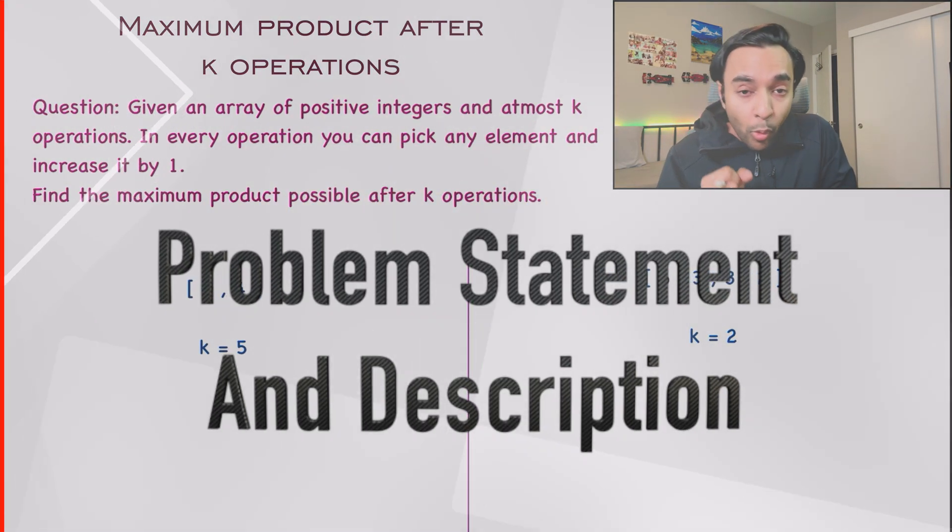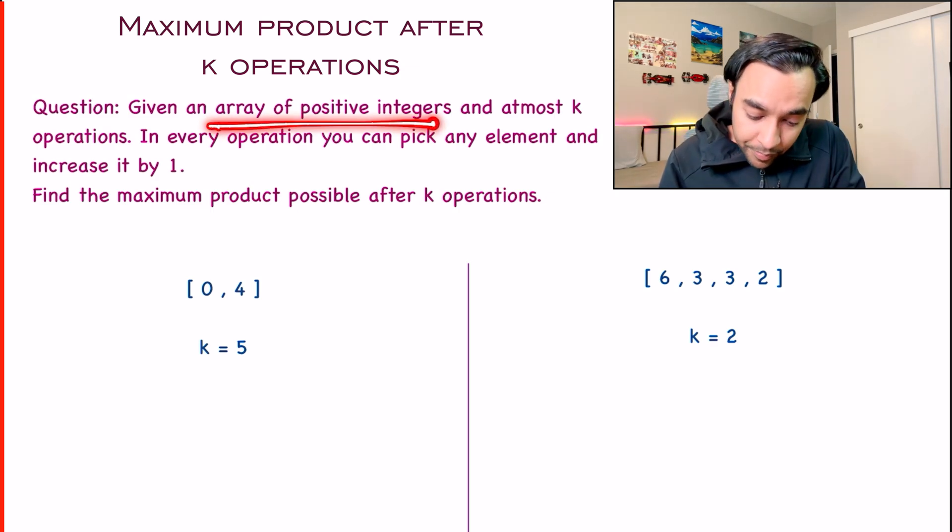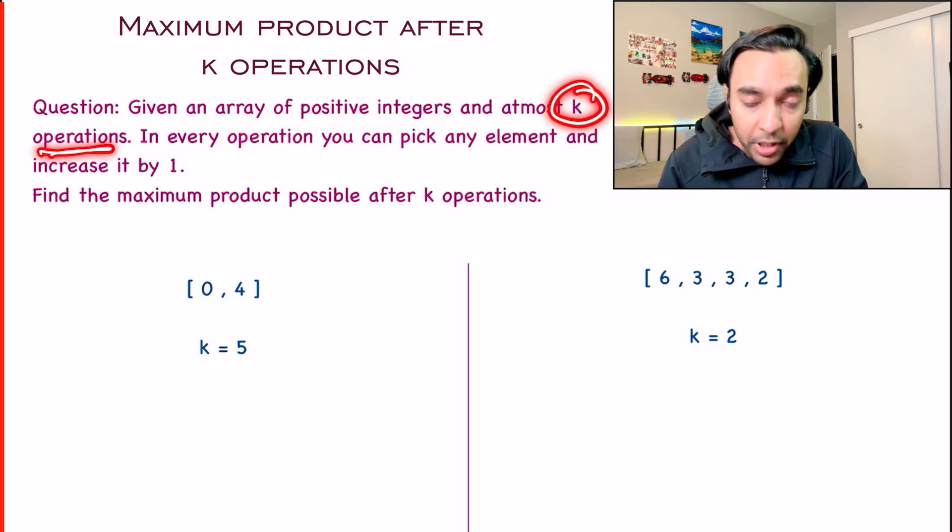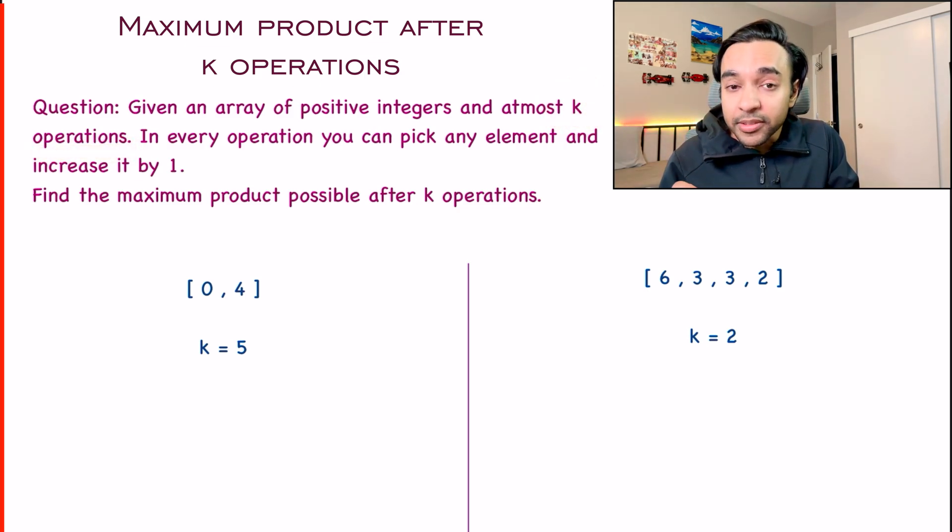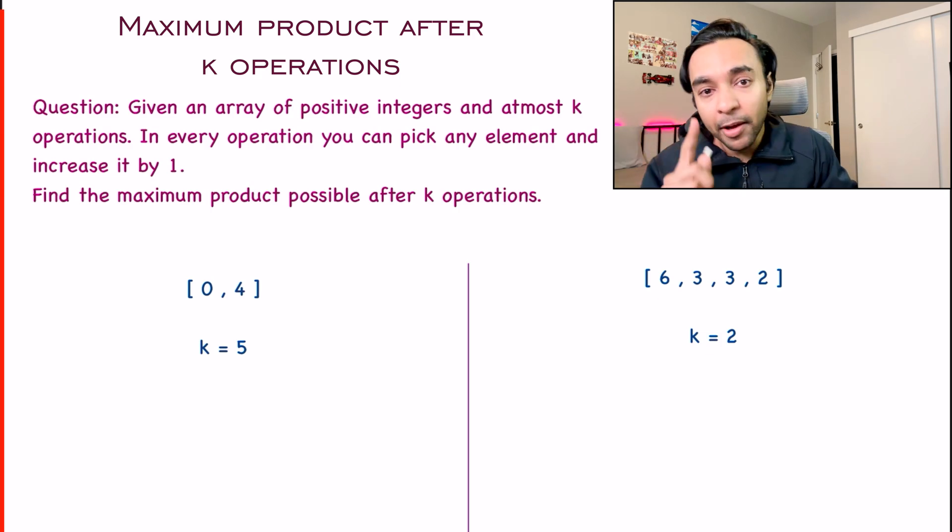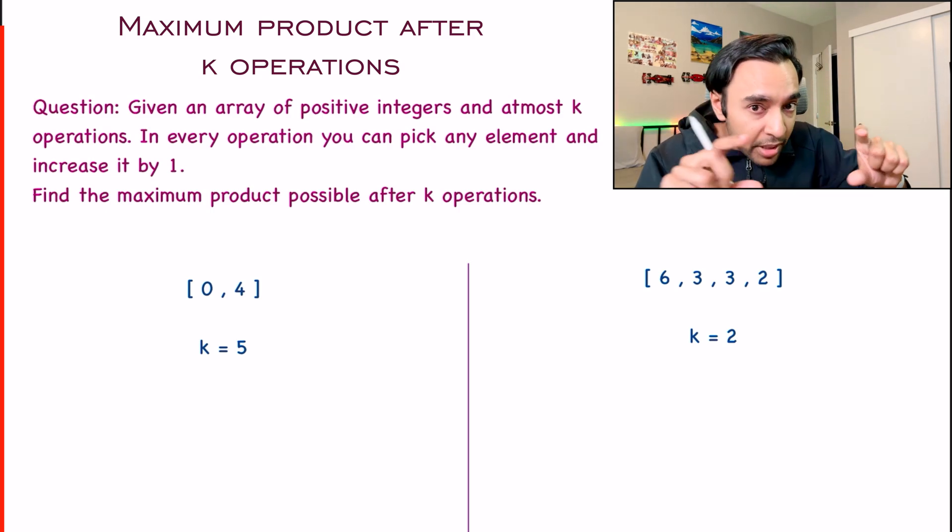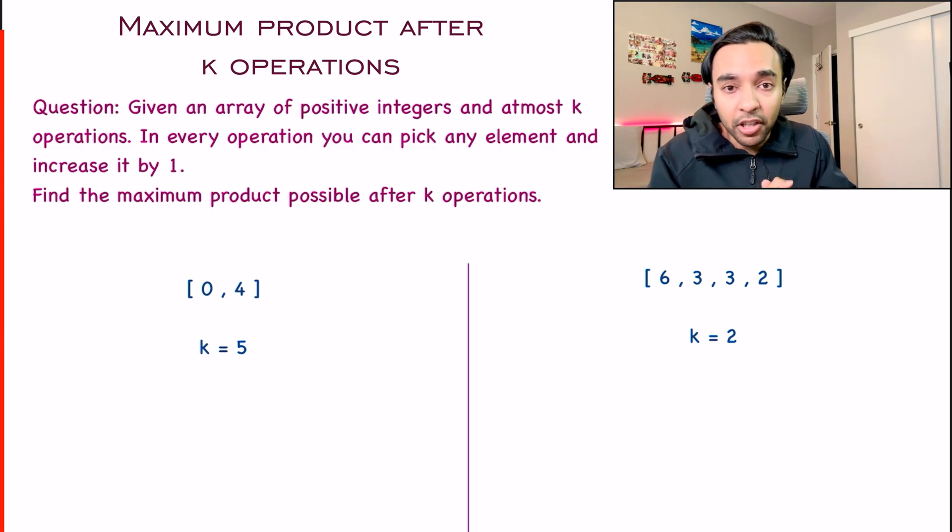It is very important to understand what does this problem statement actually mean. So you are given an array of positive integers and at most k operations. So what are these operations? For every operation, what you can do is you can pick up any element from the array. That is your choice. And then you can increment it by one. That makes up one operation. So you are allowed a total of k operations. And what do you have to do? You have to make these operations in such a way that the product of the numbers that you are getting, that is the maximum possible product. So these are a lot of words. What does it actually mean?